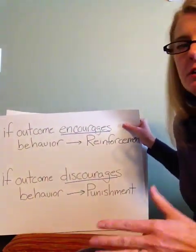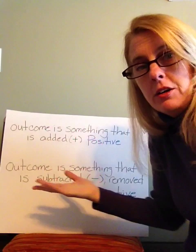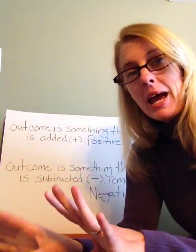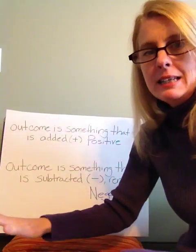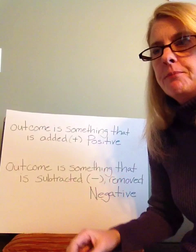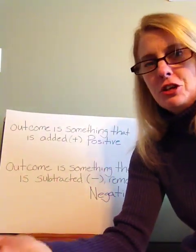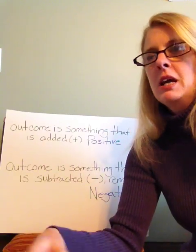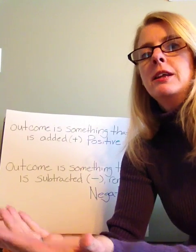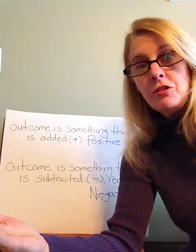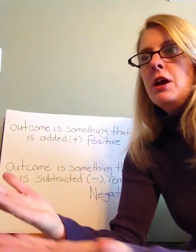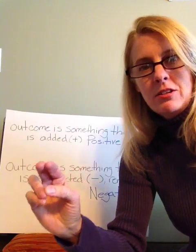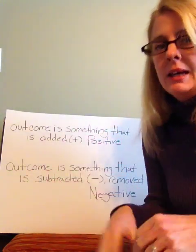Now that we have reinforcement and punishment down, we need to figure out the letter that comes before that — positive or negative. This is not about good and bad. Positive and negative refer to the contingency between the behavior and the outcome. If a behavior causes an outcome to occur, we call it a positive contingency. If a behavior prevents something from happening, we call it a negative contingency. There are negative contingencies we would really like to do — like behaviors that avoid getting fired or getting an F in class. So negative is not bad; it describes something else.